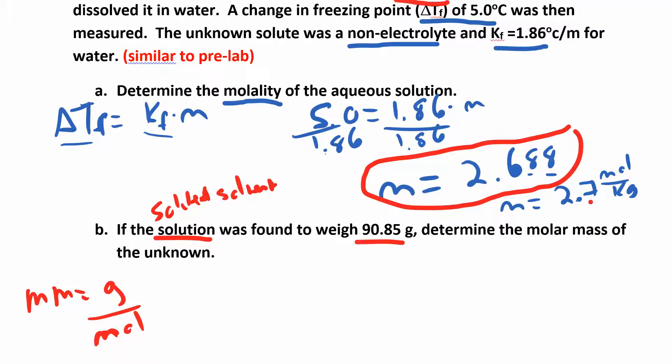Which I can get from the molality because what's molality? Molality is the moles of the solute over the kilograms of the solvent. So if I know molality and I know the kilograms, I can get to the moles of the solute. And if I know the moles of the solute and I know the grams of the solute, then I can get to the molar mass. So we're going to have to use the molality from part A and the kilograms of the solvent. So I need to find the kilograms of the solvent.